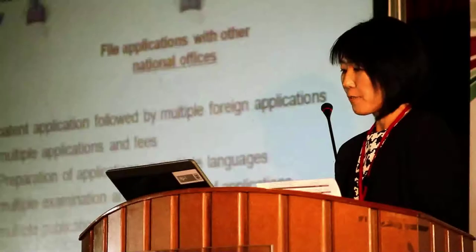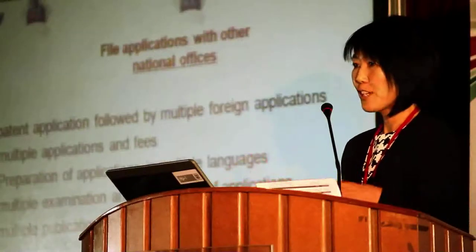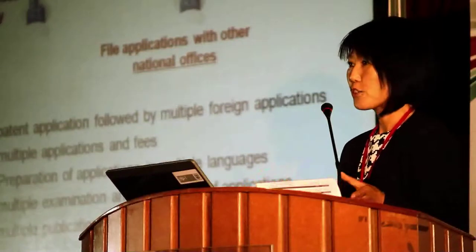Starting with the national system: we have talked about the territoriality of industrial property or intellectual property rights. Because of that, if using the national patent or trademark system, you need to file applications in the countries in which you wish to have your protection. Each office examines the application and will either grant or refuse it.